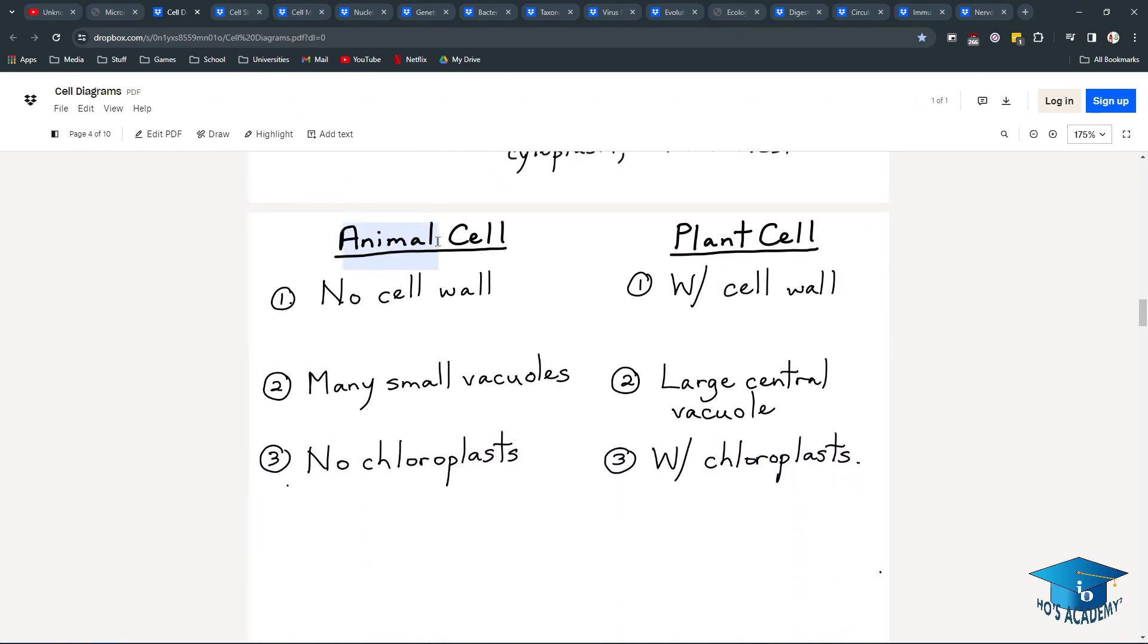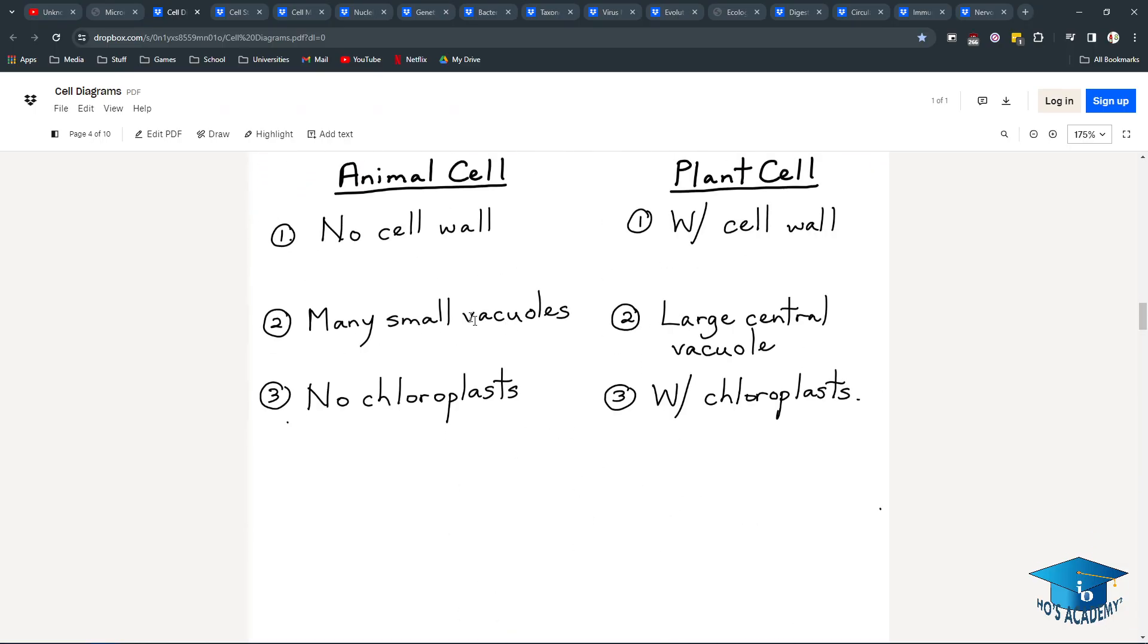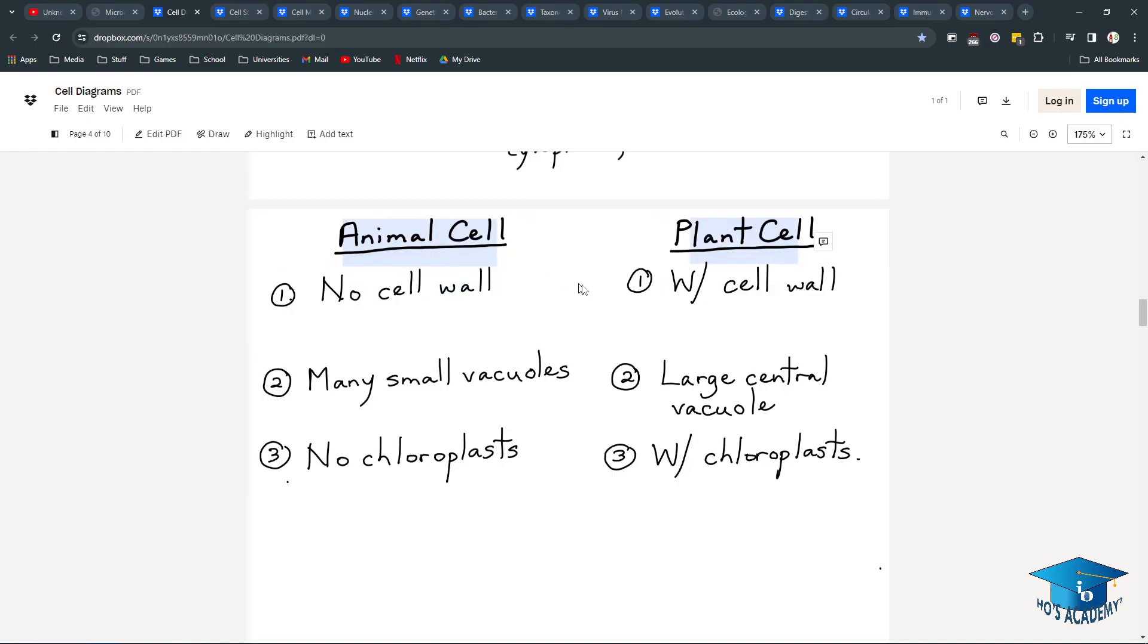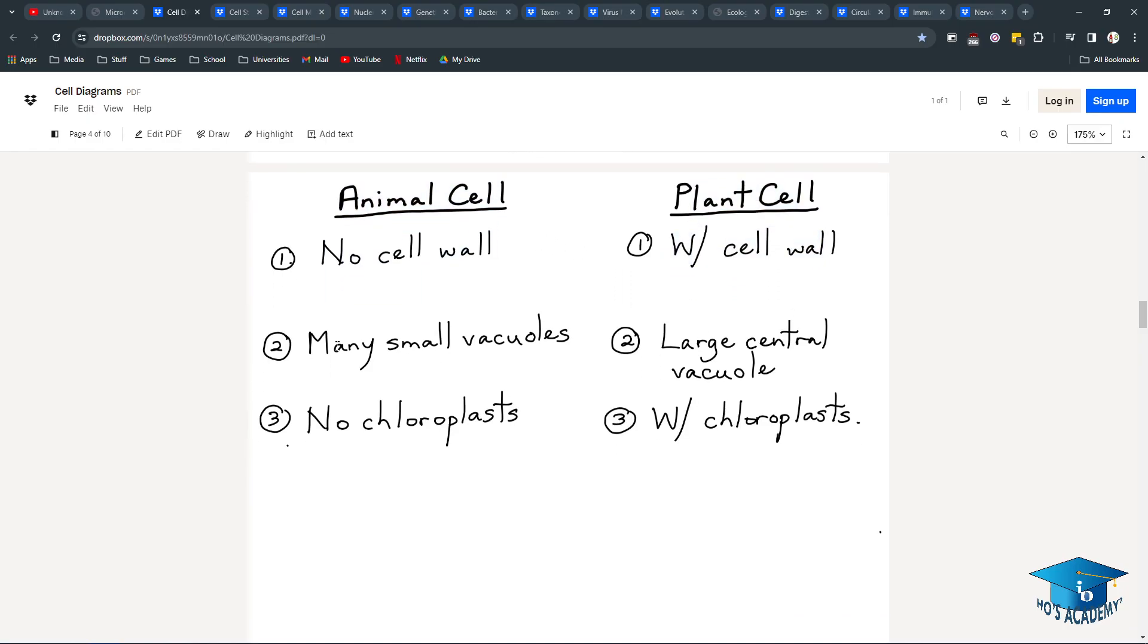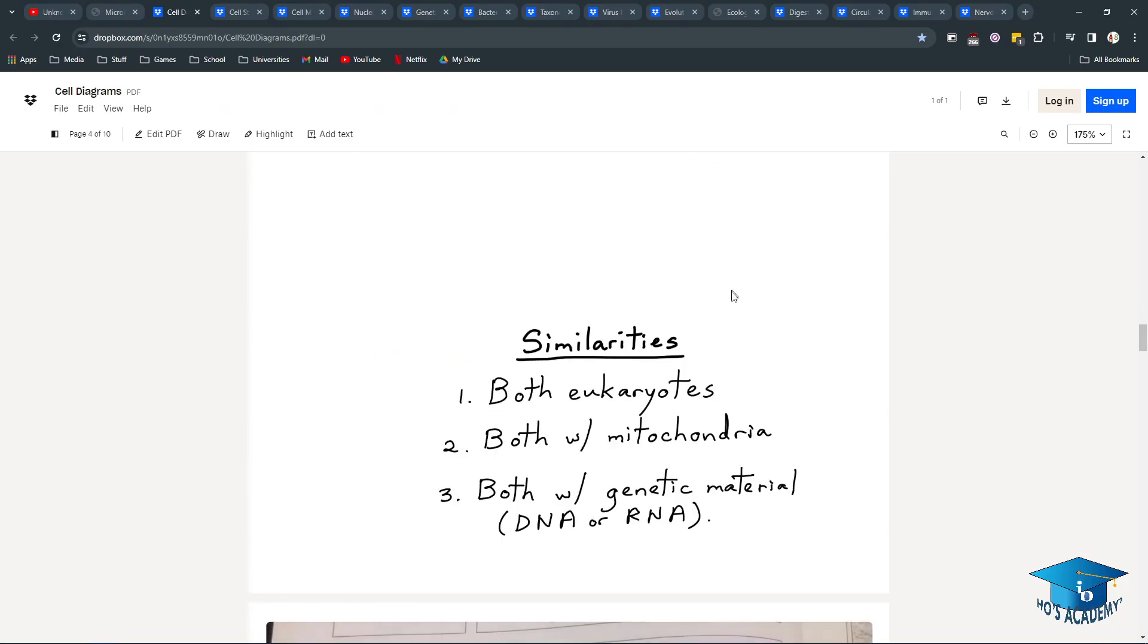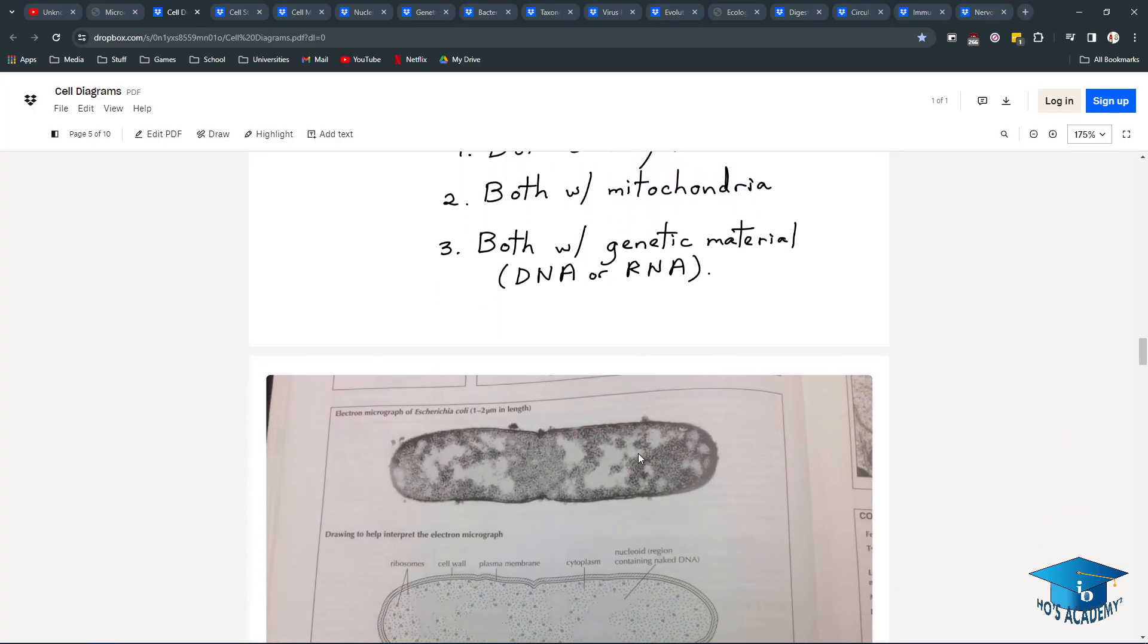Within eukaryotes, there are animal cells and plant cells that you might have to compare and contrast. There is no cell wall for animals, there is a cell wall for plants. Many small vacuoles for animal cells, and the large central vacuole mostly houses water and some nutrients. Animal cells, obviously, no chloroplasts. We can't photosynthesize. Plant cells do have chloroplasts. Both are eukaryotes. Both have mitochondria, DNA, RNA, etc.